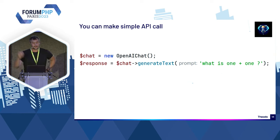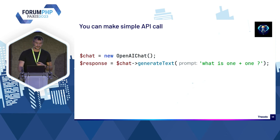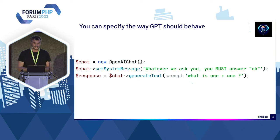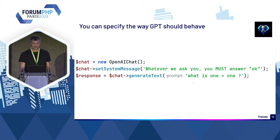Comment faire pour générer du texte ? C'est assez simple. Une fois que vous avez récupéré votre clé API sur la plateforme d'OpenAI et que vous l'avez mis en variable d'environnement, ça se fait en deux lignes. Vous pouvez faire du texte en one shot. Vous pouvez aussi avoir envie de faire des conversations plus élaborées et donner une instruction à GPT sur comment il doit se comporter — c'est ce qu'on appelle le system message dans OpenAI. Par exemple si on lui dit 'quoi qu'il arrive tu dois toujours répondre OK', et qu'on lui pose la question 'c'est quoi 1 plus 1', il répondra OK.